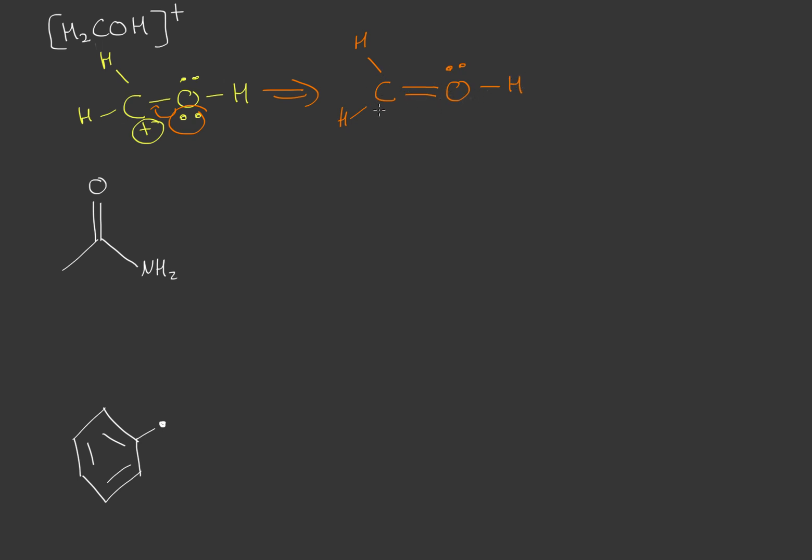If we check the formal charge on carbon it's zero. With oxygen since it has an extra bond now instead of a lone pair it actually has a positive charge on it now. That's a formal charge, not a real charge. These two forms go back and forth so none of these forms can actually be extracted, it's just the behavior of the electrons.